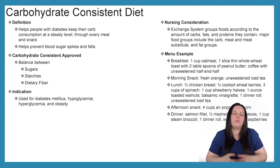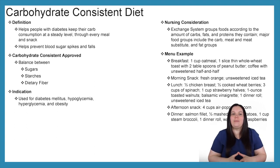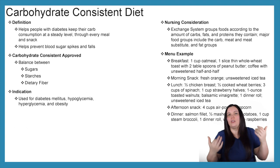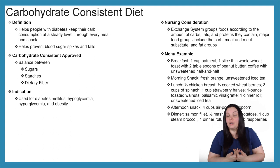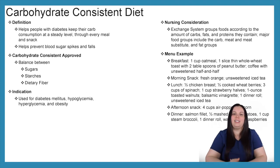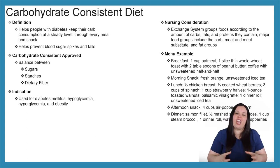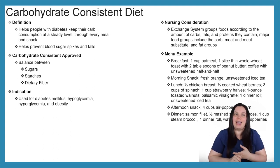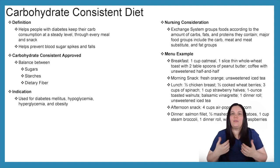Carbohydrate consistent diets are used for diabetic patients because they help keep carb consumption at a steady level through every meal and snack, helping prevent blood sugar spikes and falls. Anybody with diabetes, hypoglycemia, hyperglycemia, and obesity will benefit from this diet. Use the exchange system, which groups foods according to the amount of carbs, fats, and proteins they contain, with major food groups including carbohydrates, meat and meat substitutes, and fat groups.